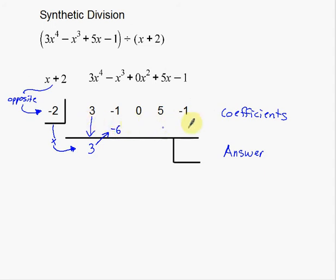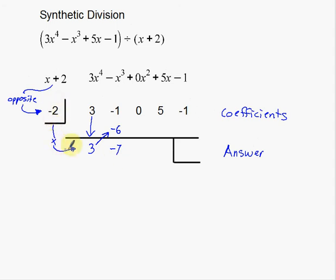So again: take the 3, bring it down, multiply negative 2 times 3 to get negative 6. Then we just kind of repeat this process. I'm going to bring these numbers down — this is a negative 1 and a negative 6 — which are going to combine to get a negative 7. You can also think of it as just add these numbers down to get negative 7. And then just continue with the process: take negative 2 and multiply that times negative 7 to get positive 14.